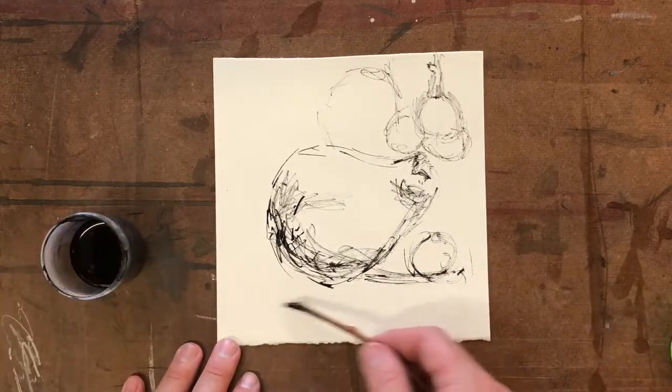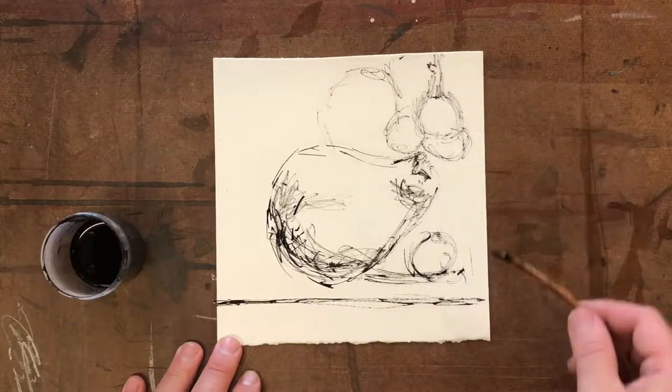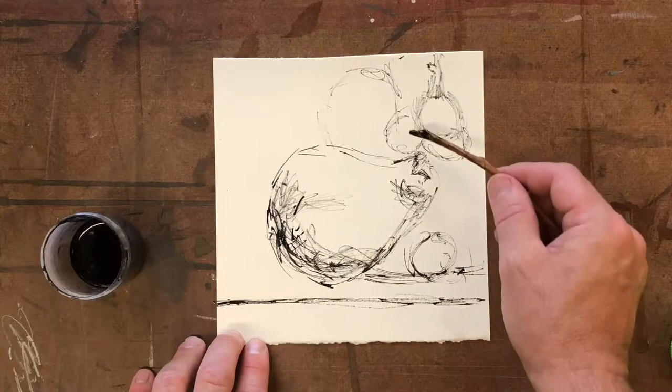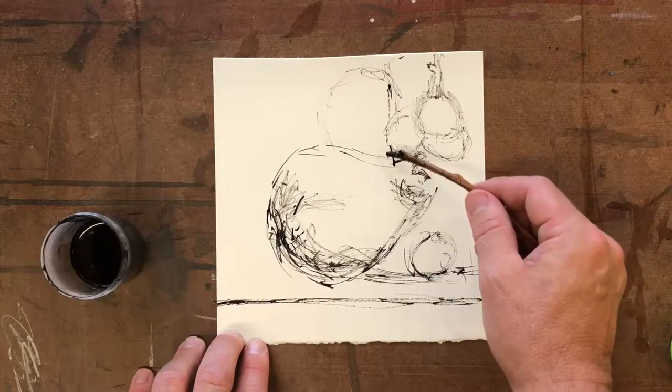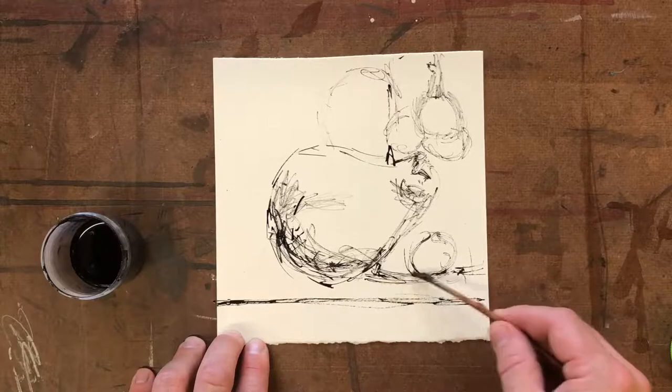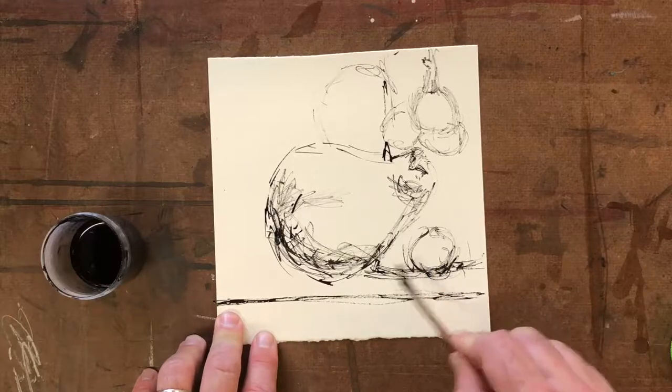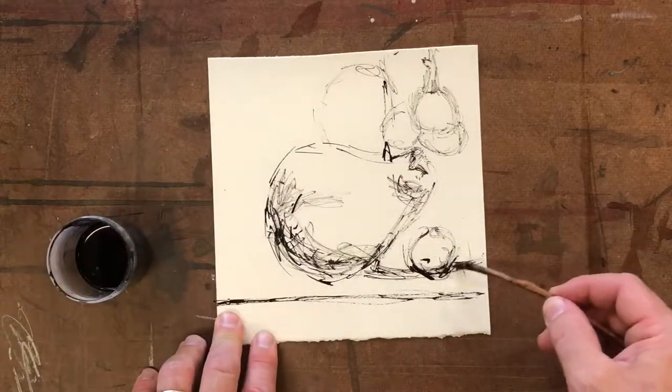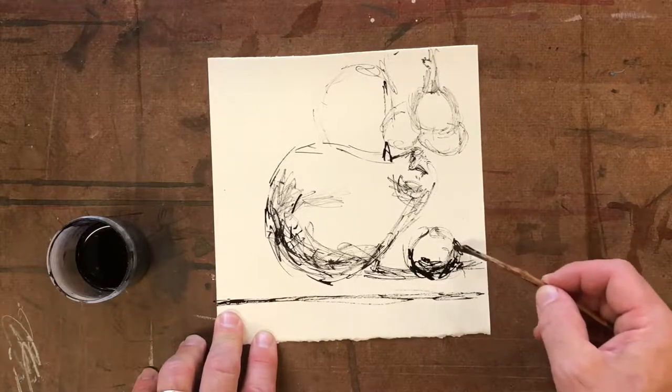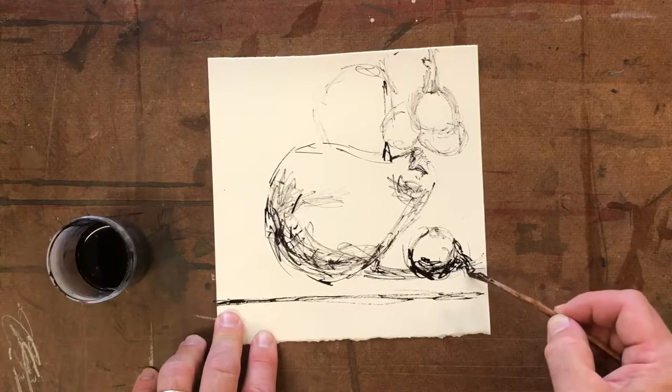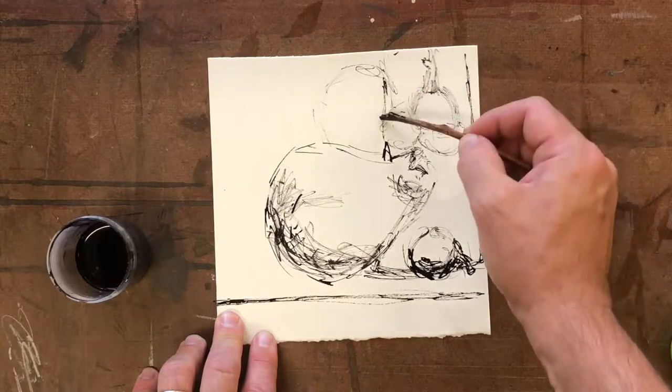Now I might just do the shelf looking thing that's over here. Continue that one across. Pull that down a little bit. Get my dark shadows in now. Maybe a little stem there. Maybe the edge of that there as well.